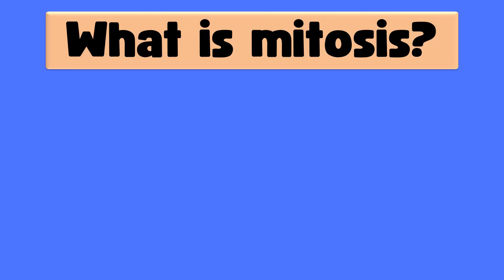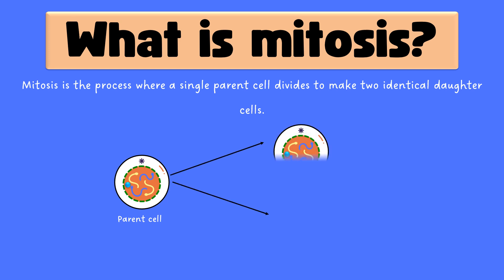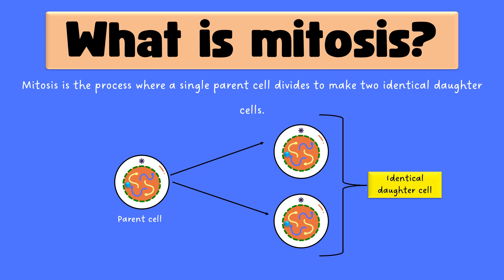So first, what is mitosis? Mitosis is a kind of cell division in which a parent cell divides into two identical daughter cells. Here, identical means that these two daughter cells have the same chromosome number as that of the parent cell. That's why mitosis is also called equational division, because the chromosome numbers are equal in both parent as well as daughter cells.